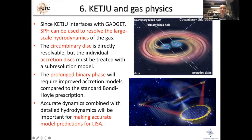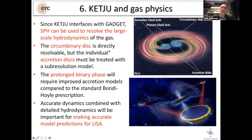In our simulations, the binary phase is very prolonged because the black holes merge much later. We are developing new black hole feedback models that work for binaries — which is not straightforward because you must account for how the two black holes interact with the circumbinary disk typically found in these systems. The circumbinary disk could in principle be directly resolved in a KETJU simulation, but individual accretion disks at smaller scales would still require subgrid modeling.